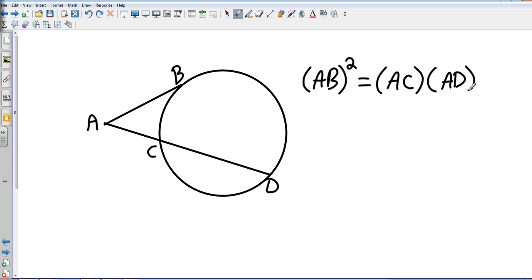So your tangent is going to be equal to the smaller piece of the secant times the entire secant. So let's look at an example on this.